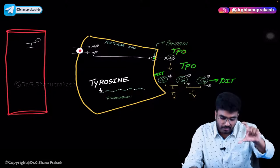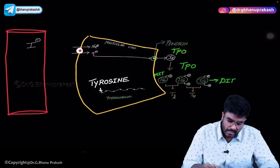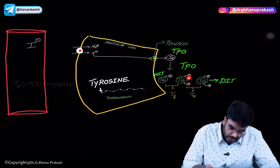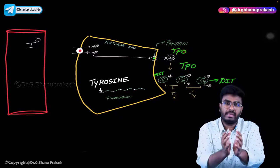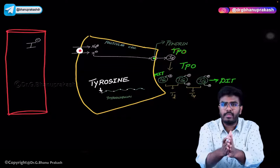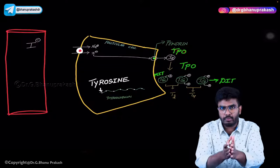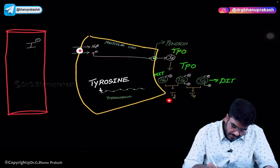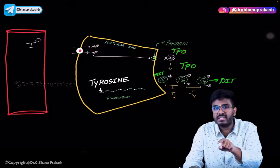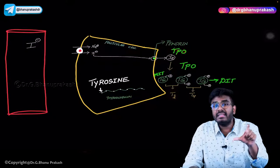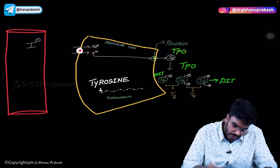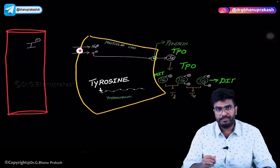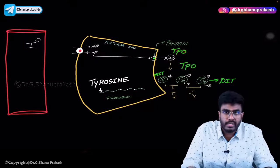Whenever you take one monoiodothyronine and one diiodothyronine and fuse them together — that is called coupling. This coupling process forms T3. T3 means three iodine molecules. Whenever you fuse a MIT with a DIT, you get T3 — triiodothyronine.